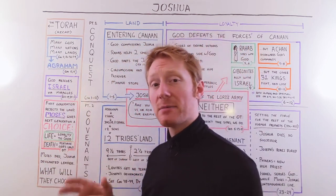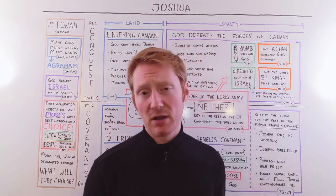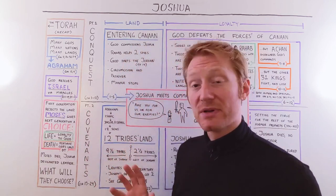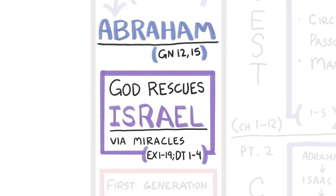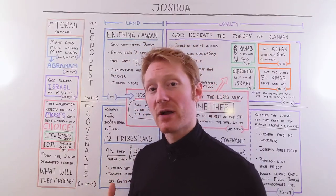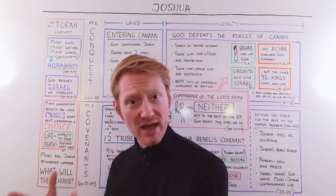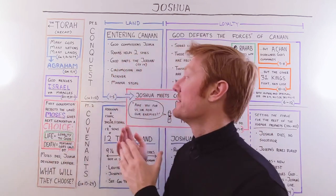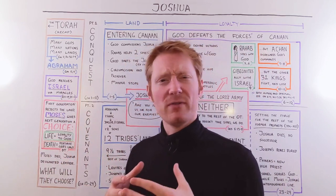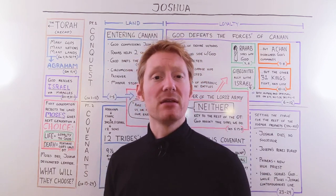Later on in the book of Exodus, Abraham's descendants find themselves enslaved in Egypt — not in the land God promised their ancestors. The book of Exodus tells the story of Israel's God rescuing Israel, not only from the humans of Egypt, but also, as the ancient Israelites believed, from the gods of Egypt as well. So you have one God that goes to war with the gods of Egypt to ransom this people group out. Once Israel is rescued through very large-scale miracles, they make a pact with this God in the wilderness.